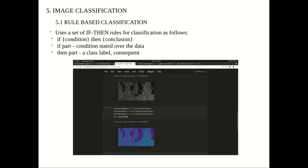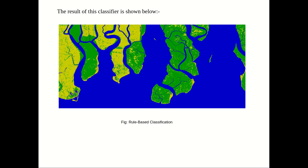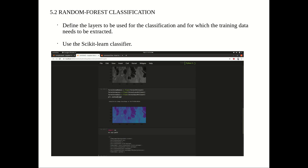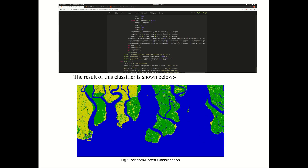Here is the sample of the code, followed by the result of this classifier and the generated image. Moving to random forest classification — random forest classification defines the layer to be used for classification, for which the training data needs to be extracted. We use the Scikit-learn classifier, train the data, and then detect and analyze the result. The next slide shows the result of the random forest classification.